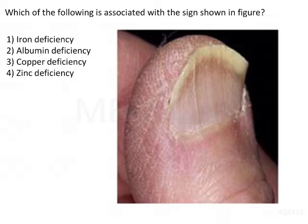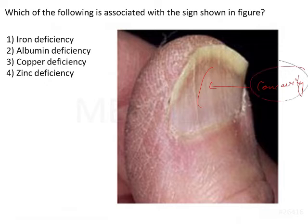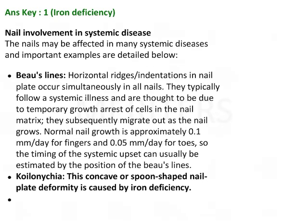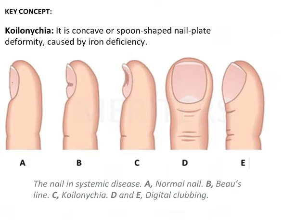First of all, you can see the concavity here. Our nail is there and the nail signifies a lot of systemic disease as well. So there are changes in the anatomy of nails. Whenever there is some systemic disease, there are chances that the nail morphology can be changed. The anatomy can change and they signify certain diseases, certain pathological processes, or certain deficiencies. So let me quickly take you through the basic normal anatomy of your nail.